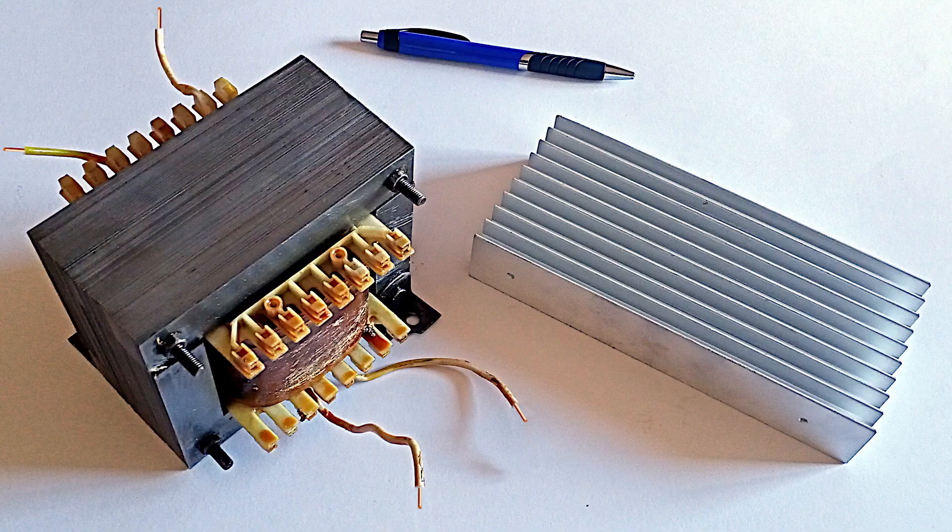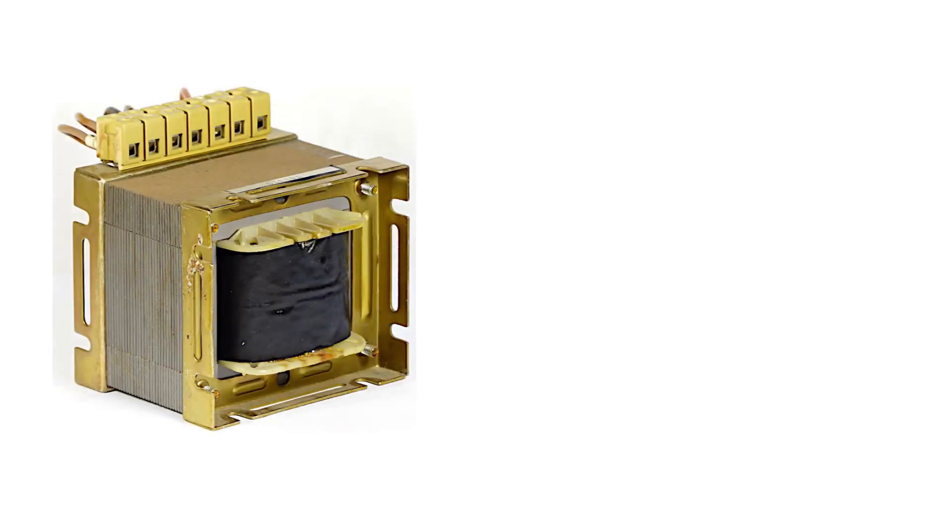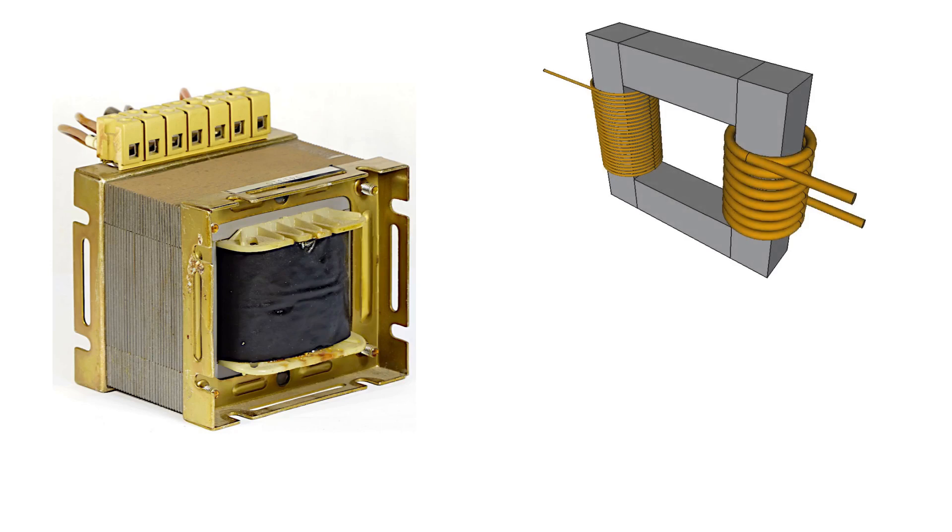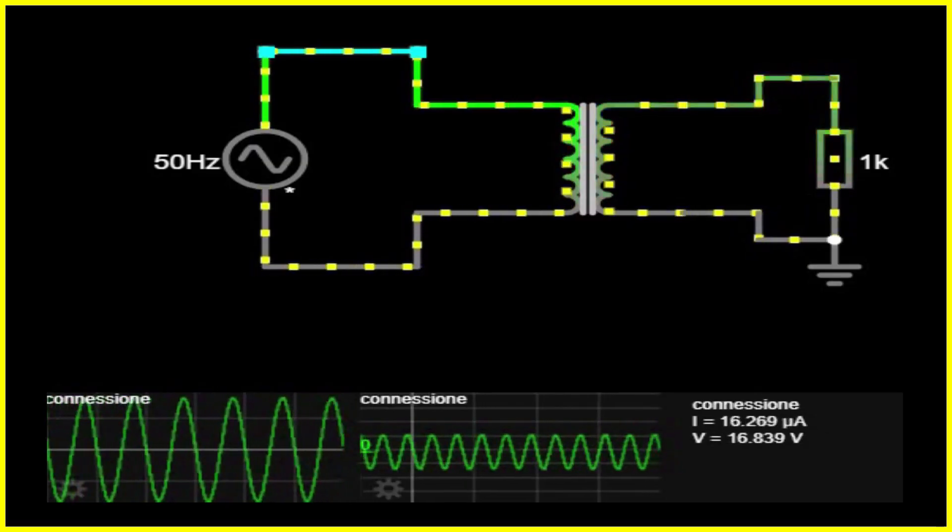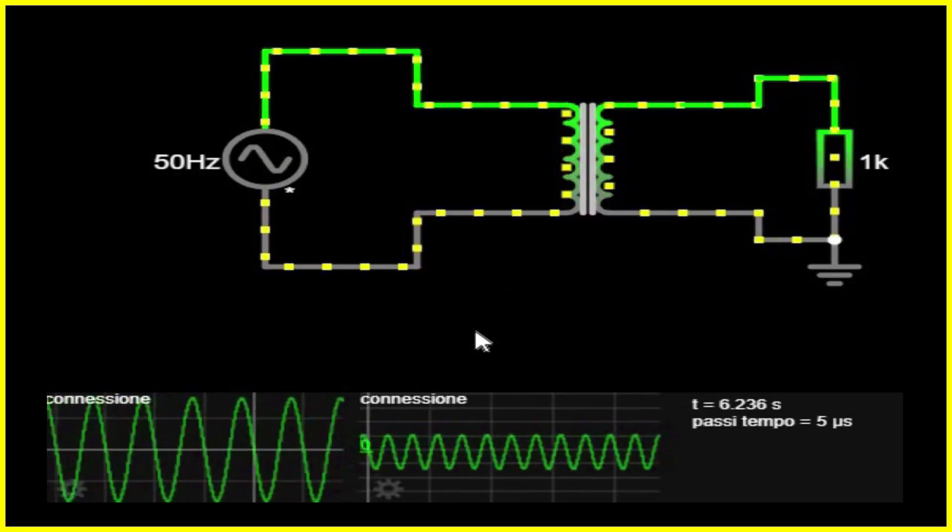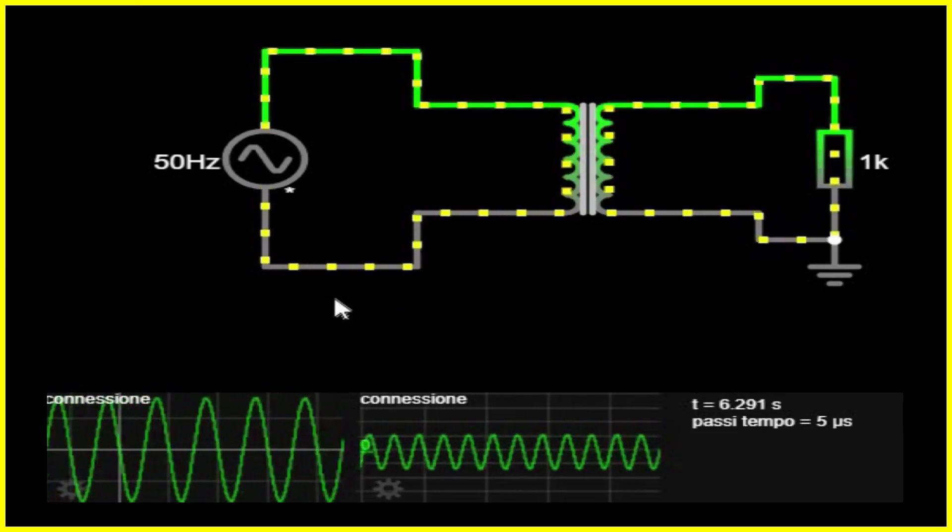This video will showcase some measurement experience of functional parameters on small power transformers. These are static electrical devices designed to convert voltages and currents at low power levels, typically ranging from a few volt amperes to several kilovolt amperes.